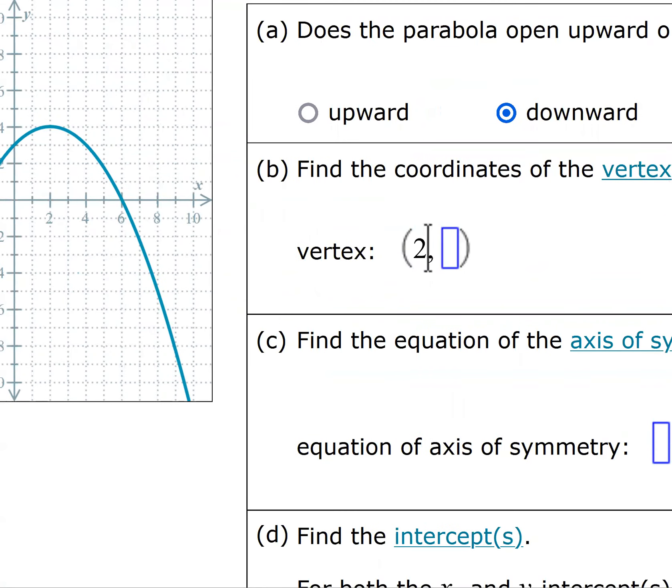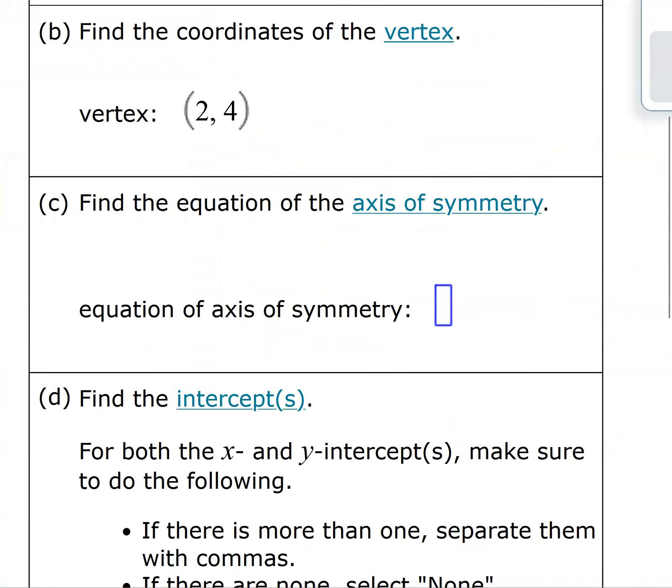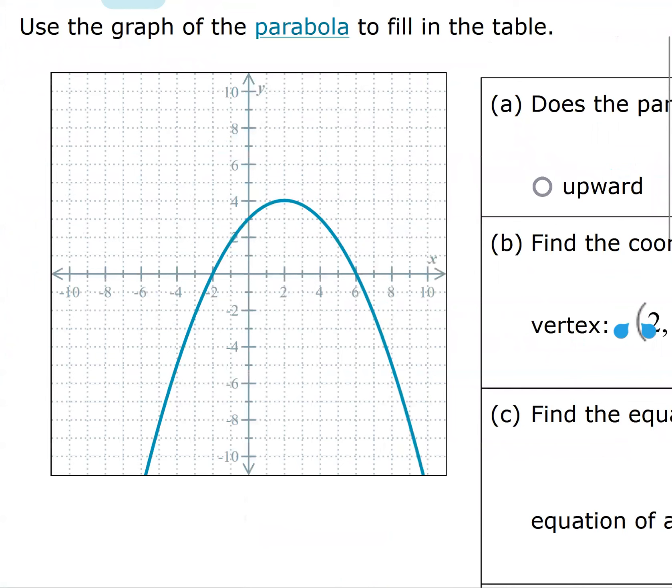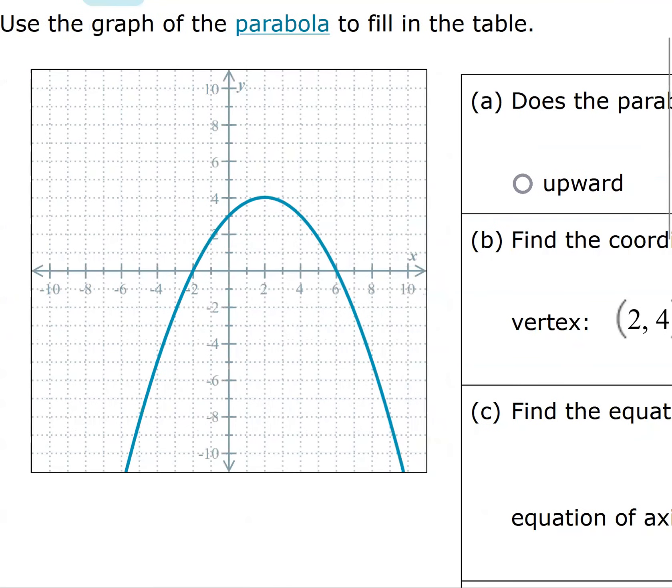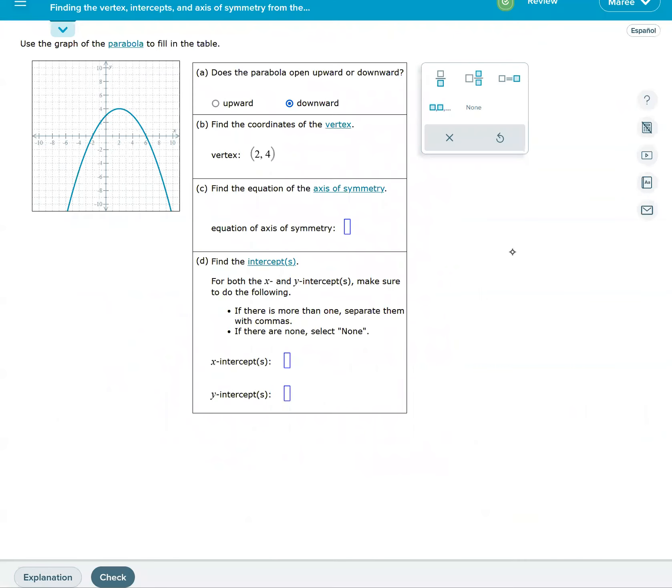We should find the equation of the axis of symmetry. If a parabola is facing either upward or downward, the axis of symmetry will be an x equals. You can see that the turning point is x equals 2. It's going to equal the x coordinate of your vertex.